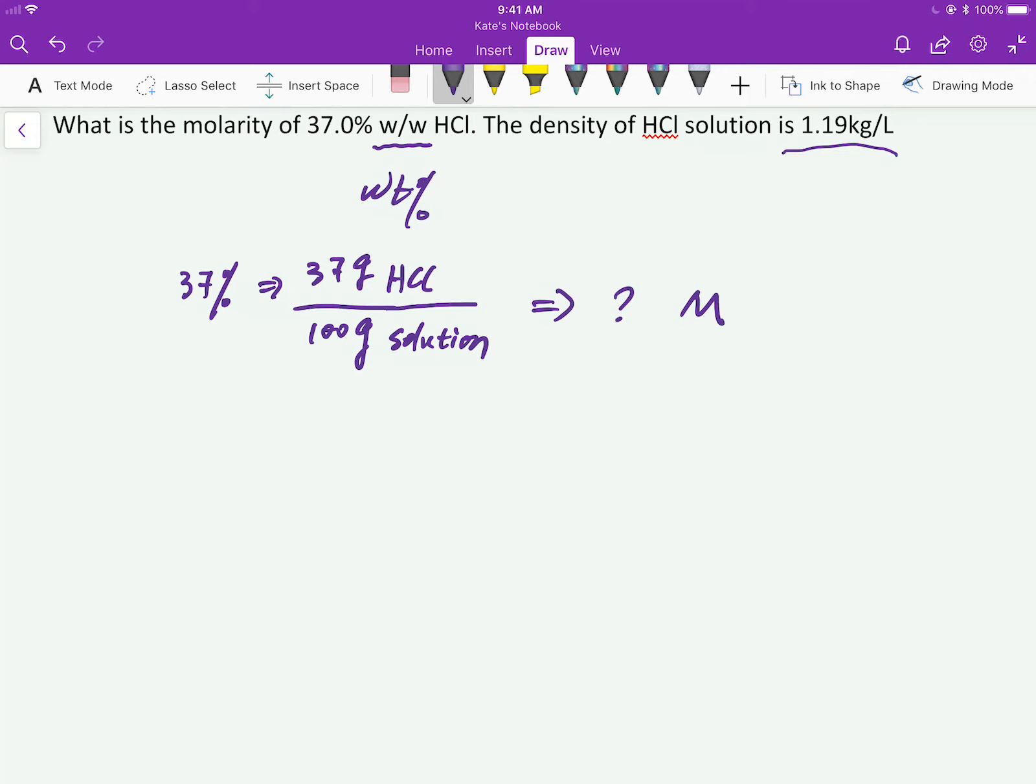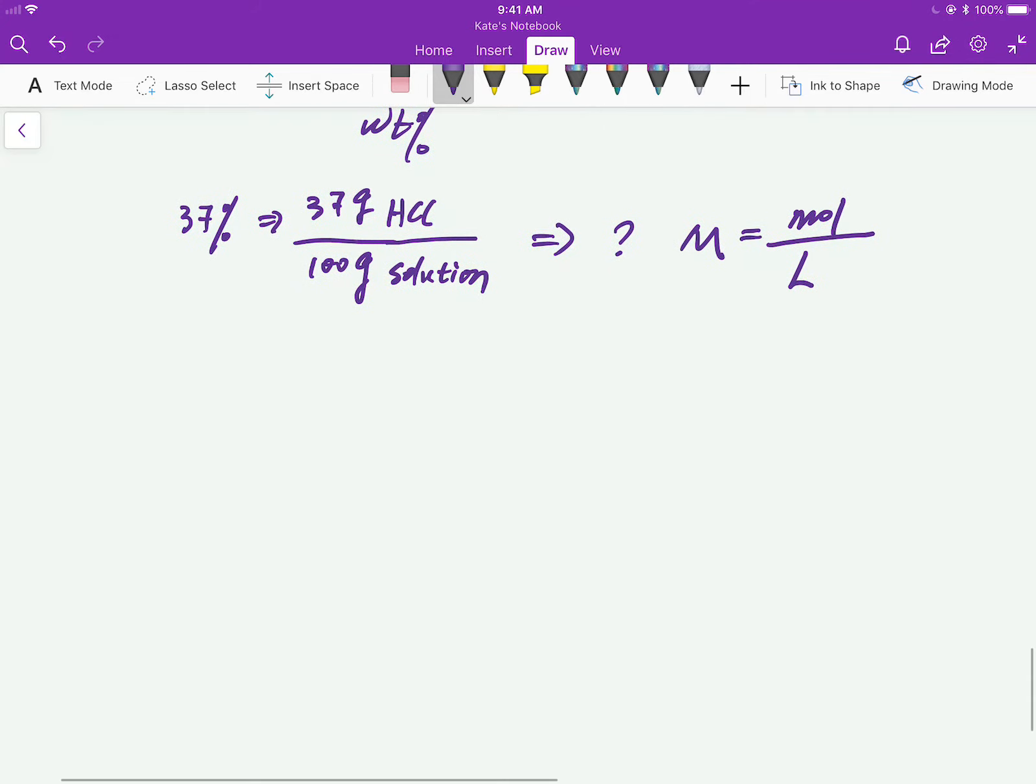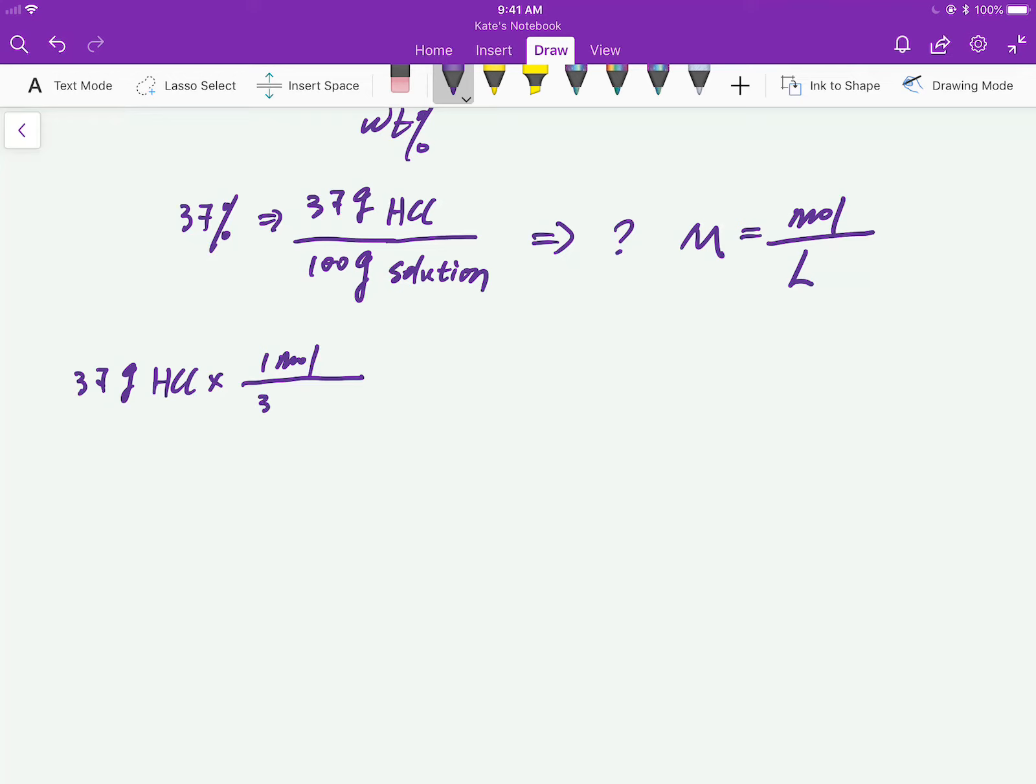And we know the definition of molarity is mol of solute divided by liter of solution. Then we can convert gram to mol by the molar mass of hydrochloric acid. So 37 grams hydrochloric acid, the molar mass is 36.46.